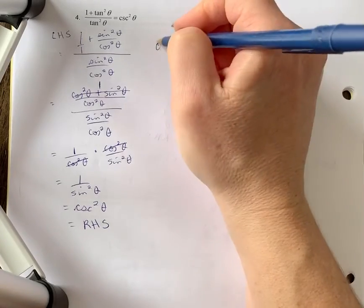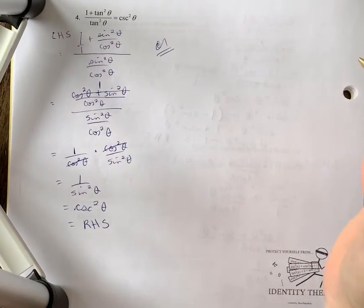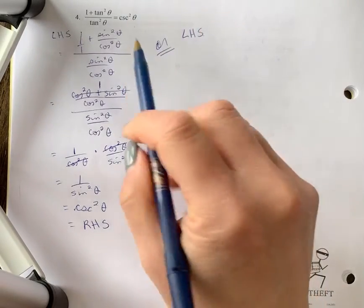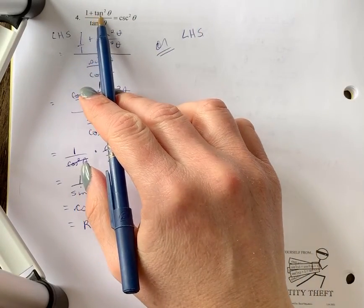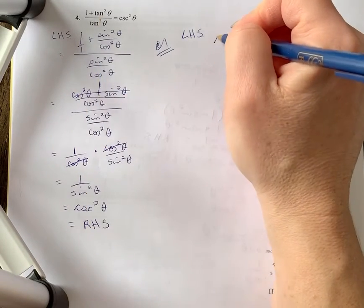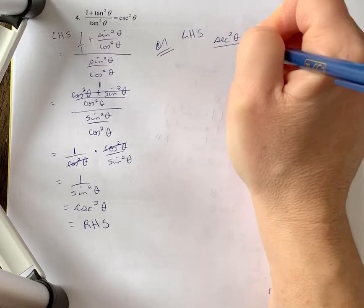Okay, so we finished that question. I like to show this one in two different ways. With the left-hand side, if you were looking at your formula sheet, you'll notice that one plus tan squared theta is equal to secant squared theta. So you could have replaced that with secant squared theta right away.